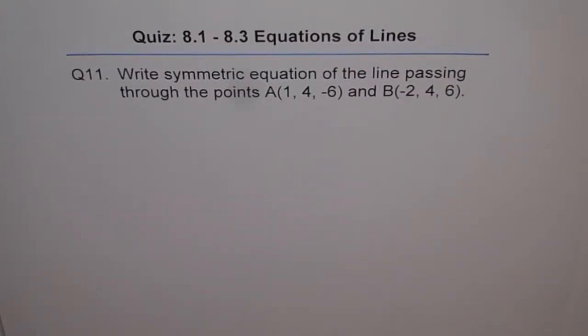Question 11. Write symmetric equation of the line passing through point A(1, 4, -6) and B(-2, 4, 6).